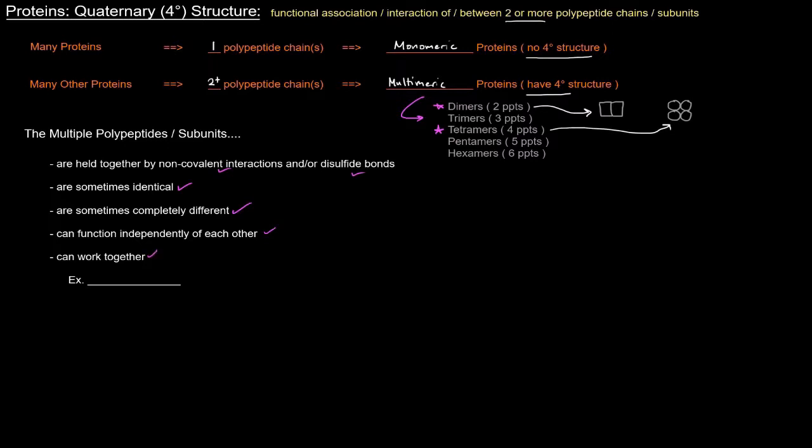In fact, there's this concept called cooperativity, which just to give you the skinny on it, it's the idea that the binding of a ligand at one subunit increases the affinity at the other subunits for that ligand. So they kind of all cooperate and work together. Hemoglobin exhibits that.